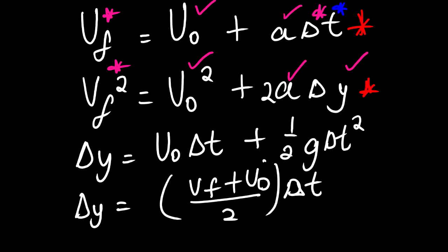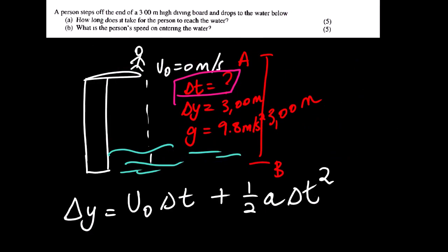Looking at the next one. Here, we have the displacement, we have initial velocity, we are looking for the change in time, we have our g. We are looking for the change in time, so this and this is one and the same thing. This equation is suitable for this question. We are going to use this equation.